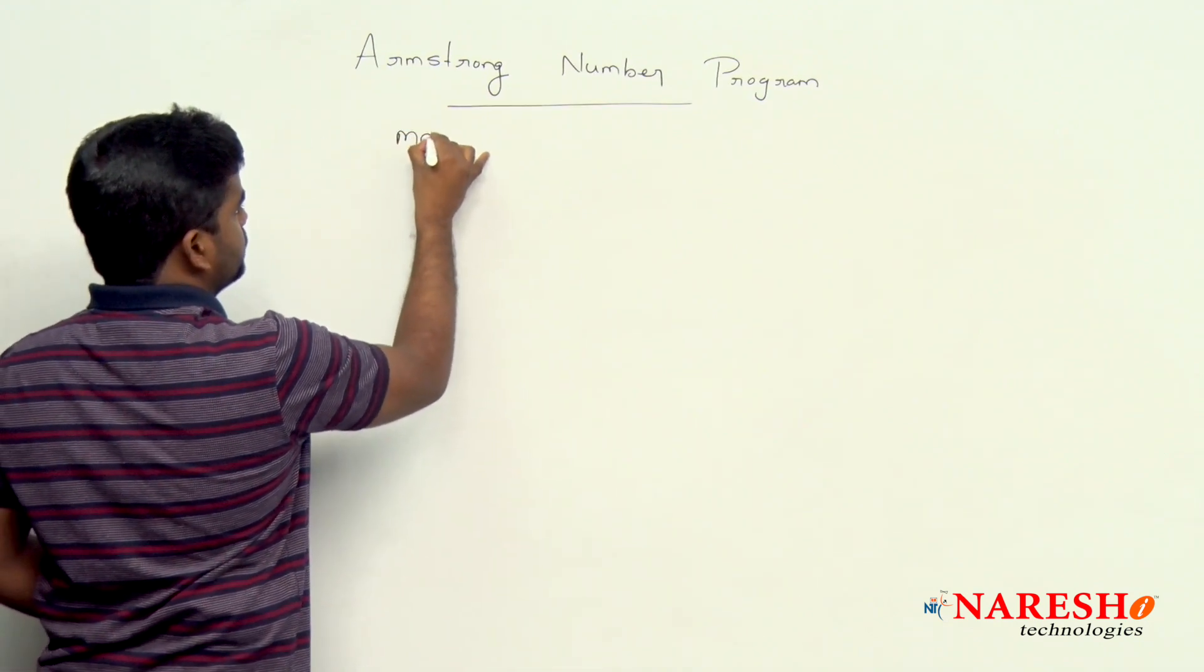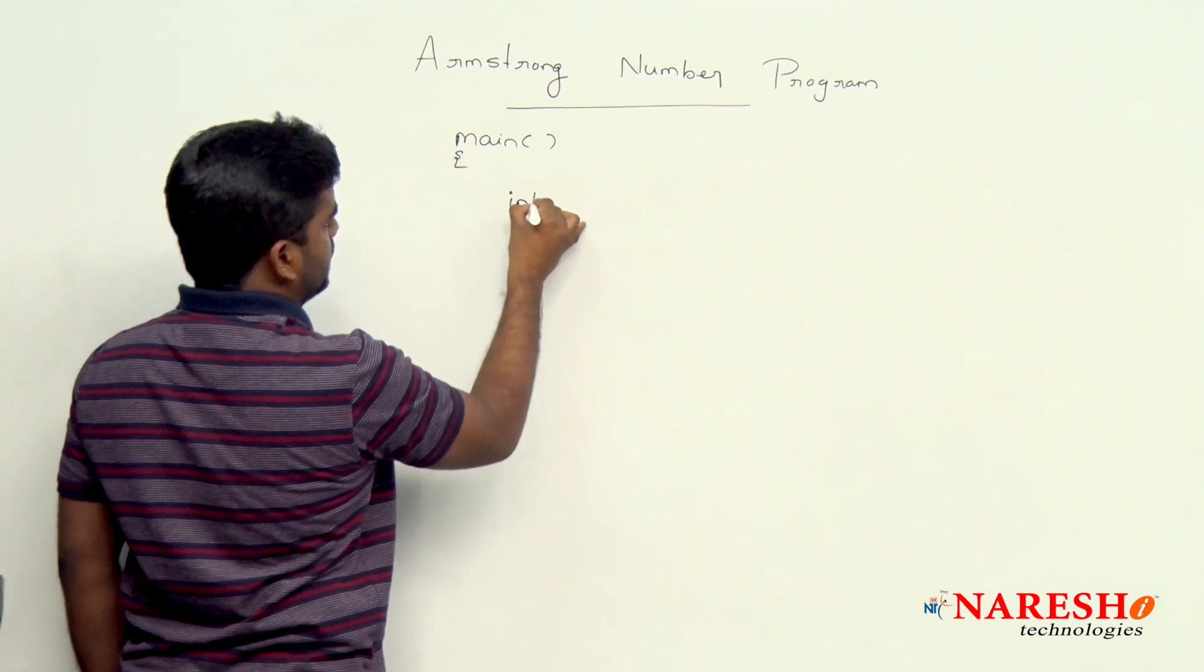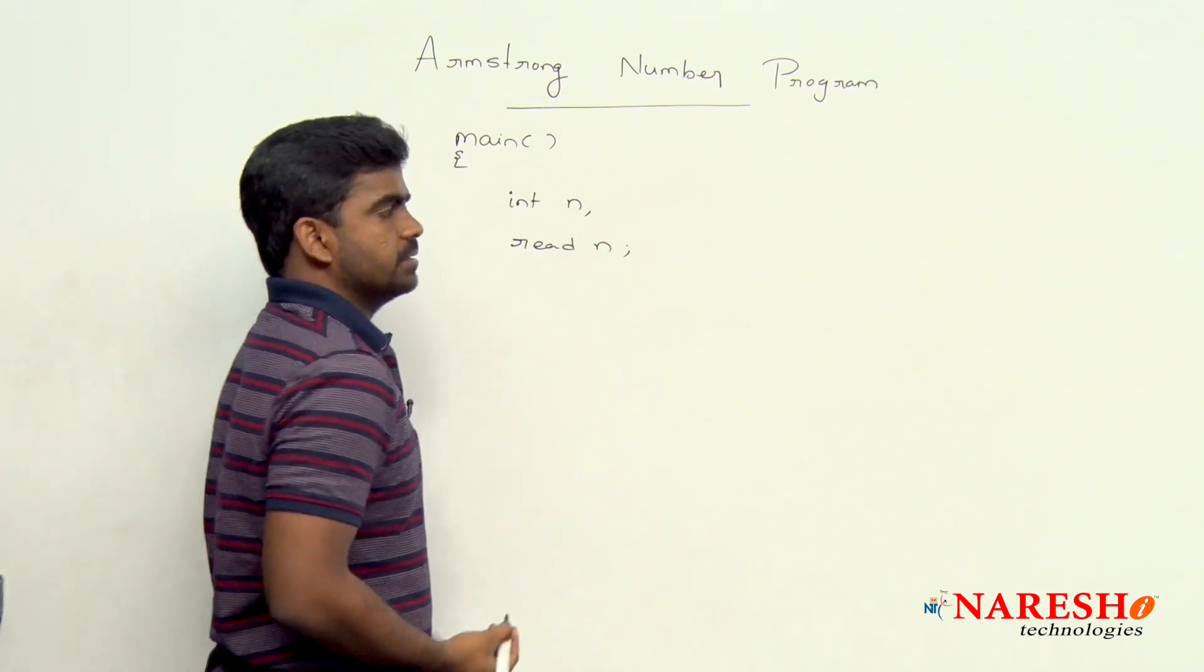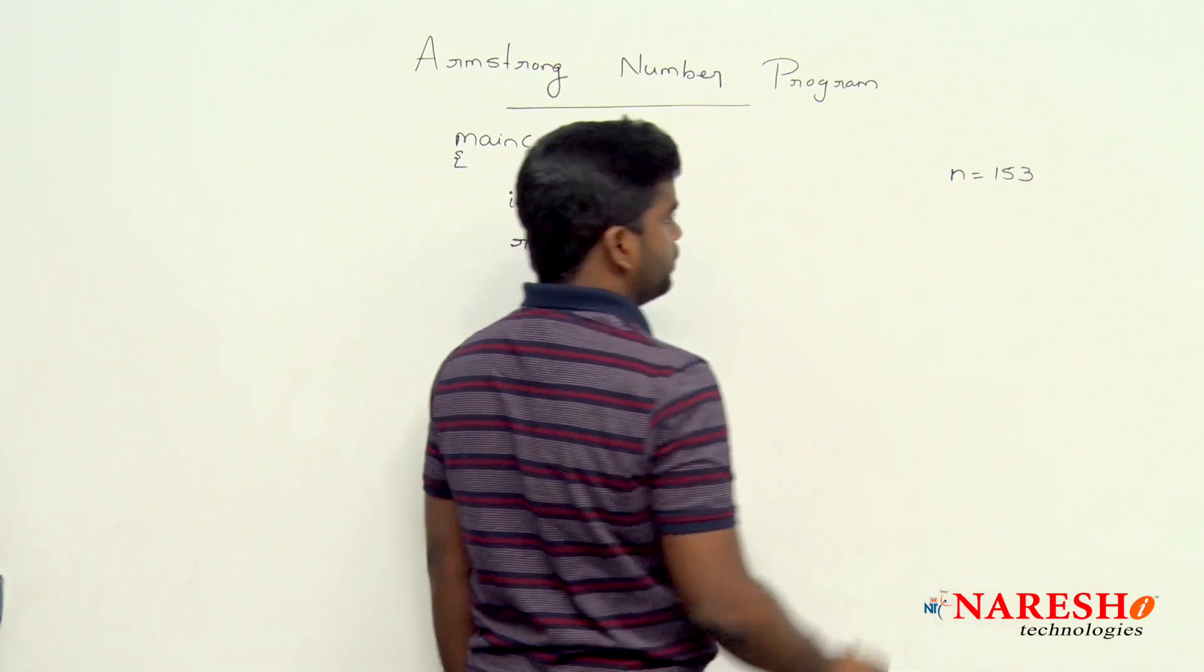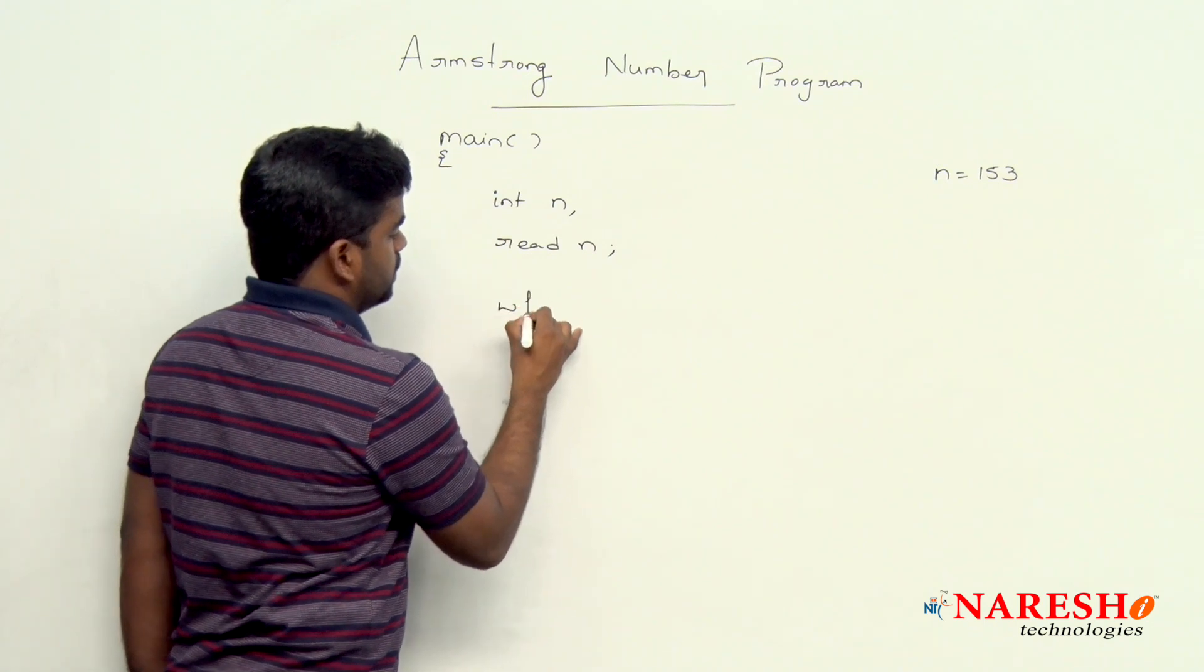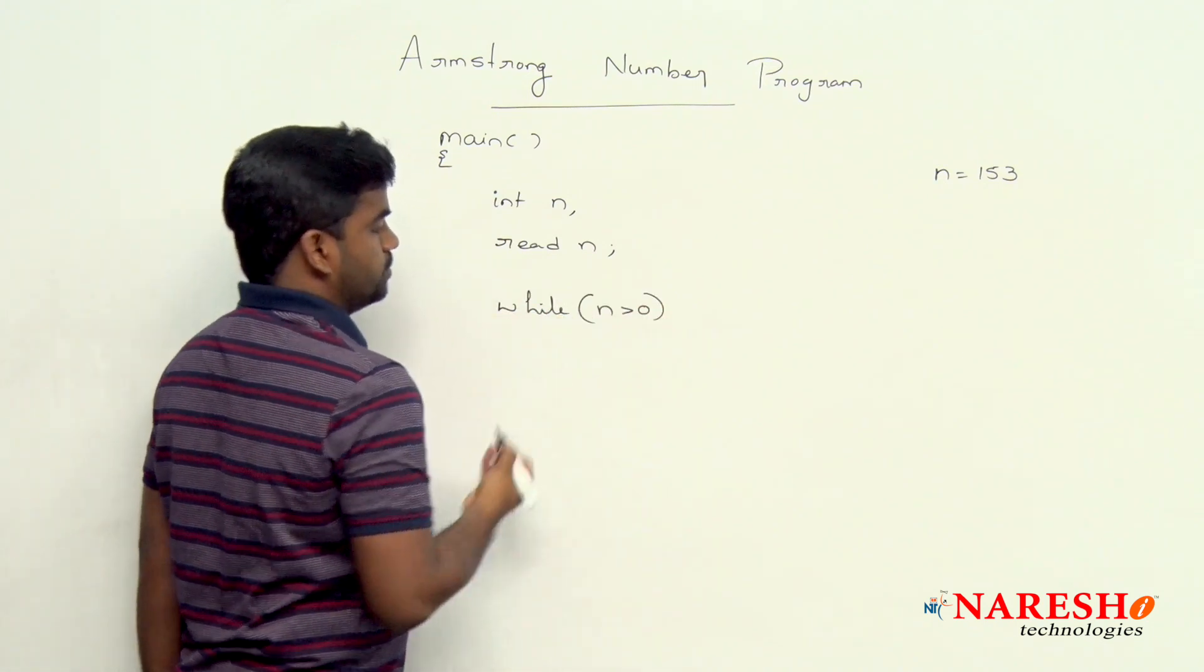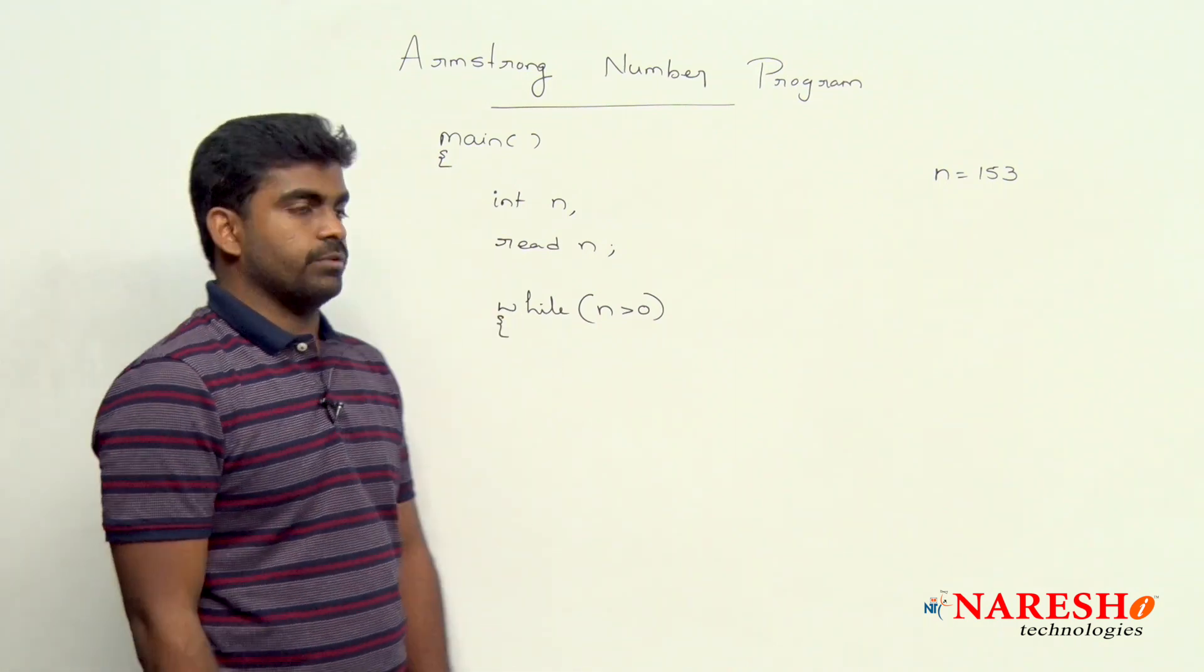Execution starts with the main. We are reading one number n. Consider the same example, we are taking that n value as 153. Now, we are repeating that loop, while loop: n is greater than 0. Until n value becomes 0, we need to perform this loop.